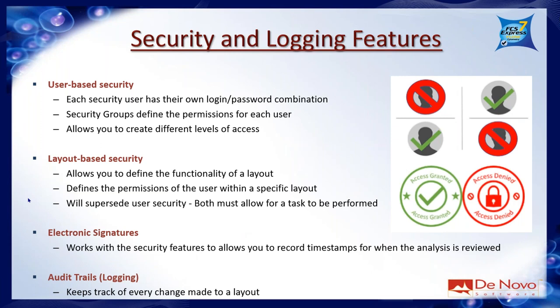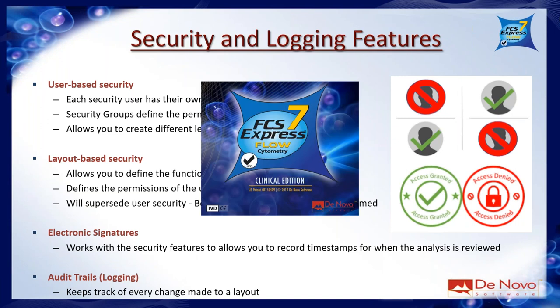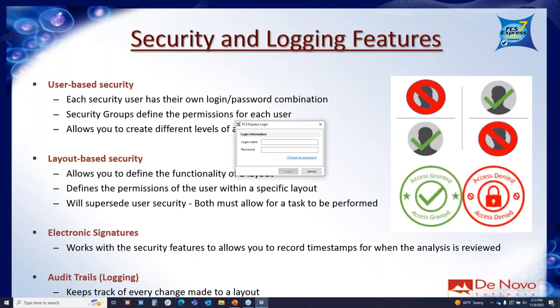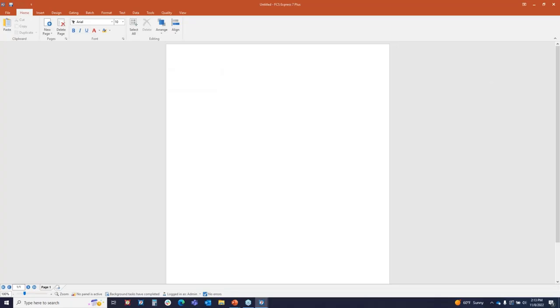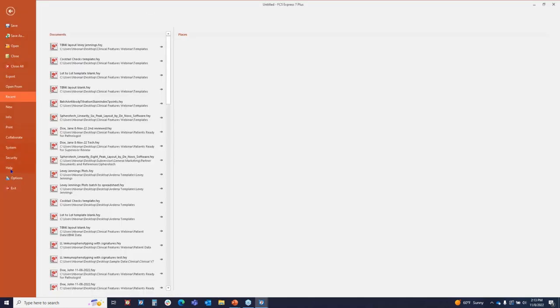Let's go into the software and see what this looks like in practice. I'm going to launch FCS Express 7 IVD. Since I'm using security and logging with this license, the first thing that pops up is a login screen. I'm going to log in as the admin. Every license that comes with security will have at least one administrator with permissions to do all of the things you might want to do. I'll start with a blank layout and navigate to File > Security to see the security settings.